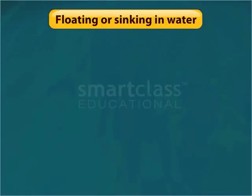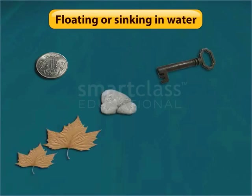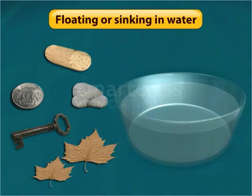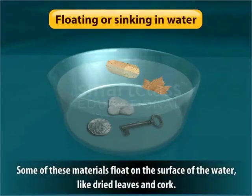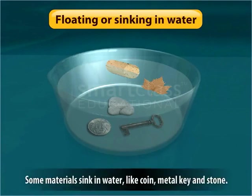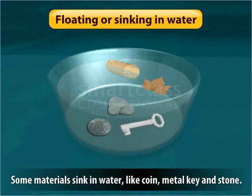The next property is the floating or sinking in water. Let's take a few materials like a coin, a metal key, stones, dried leaves and a piece of cork and drop them in a tumbler of water. Some of these materials float on the surface of the water, like dried leaves and cork. On the other hand, others like coin, metal key and stones sink to the bottom of the tumbler.